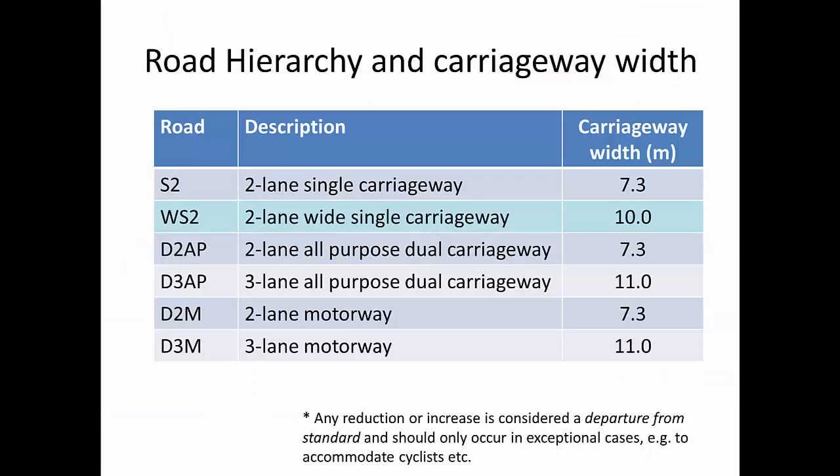The road hierarchy and carriageway widths gives you the dimensions for any given type of road. The most basic and most common is the S2 road — a two-lane single carriageway — with one lane of traffic going in one direction and another lane going in the opposite direction. There's also a wide single carriageway. The carriageway width of an S2 is 7.3 metres and the carriageway width of a WS2 is 10 metres.